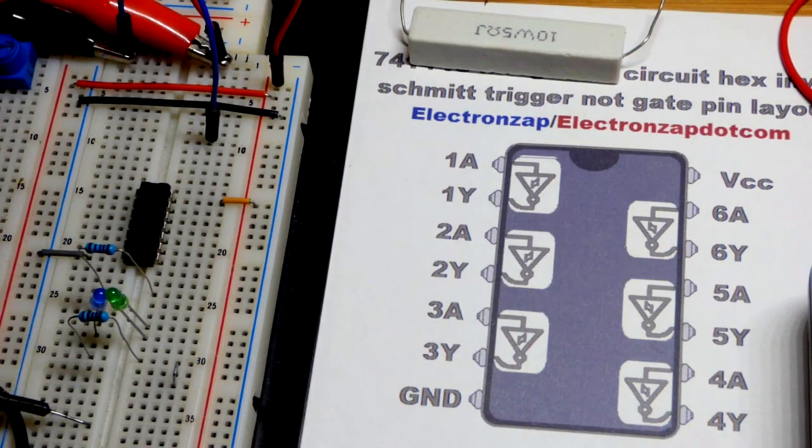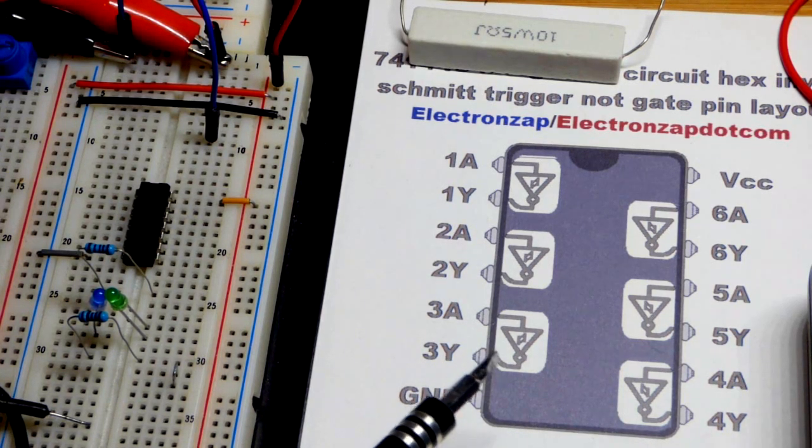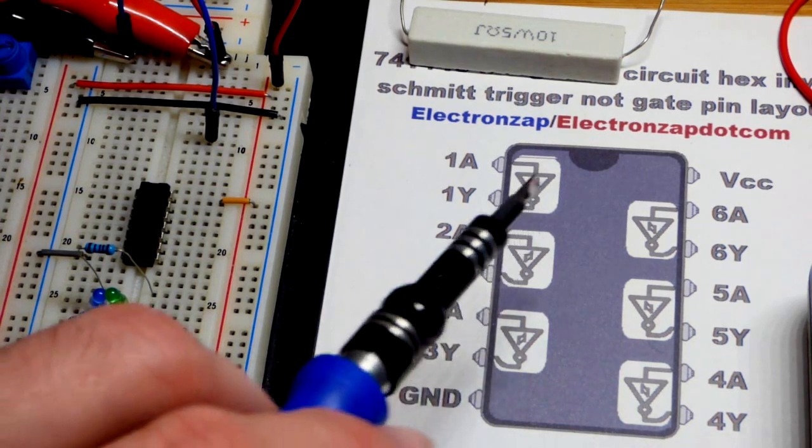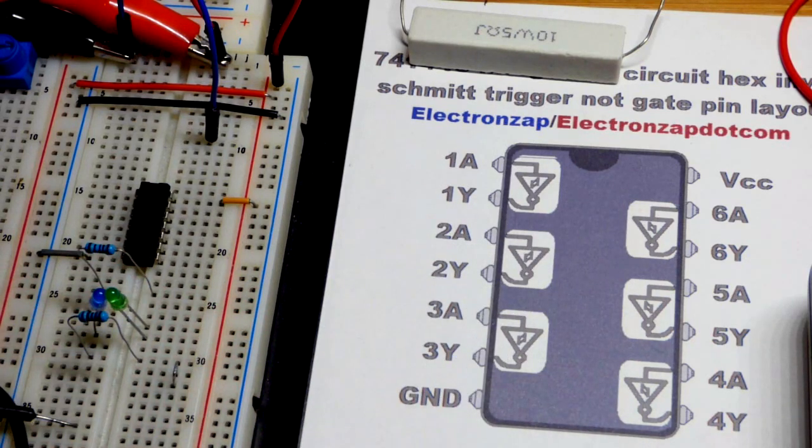So now in this video I thought we would just have a little random fun with a 7400 hex inverter. The hex means 6, as you can see we got 6 right here - inverters.